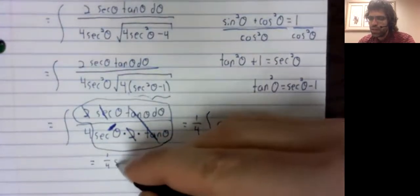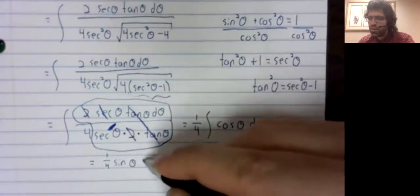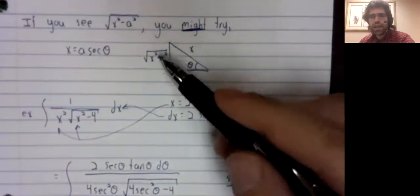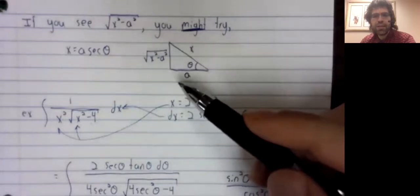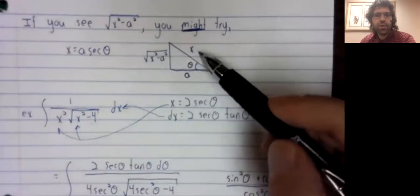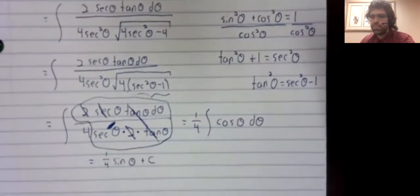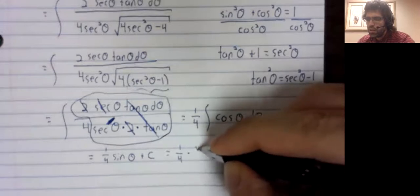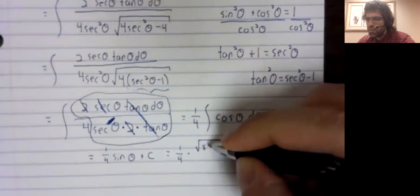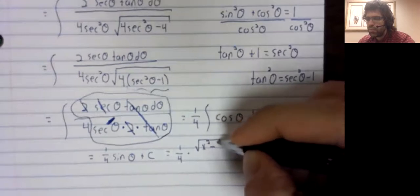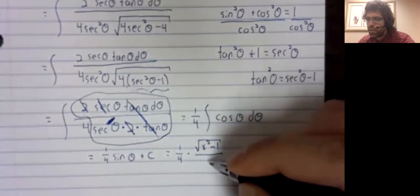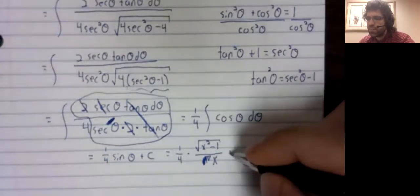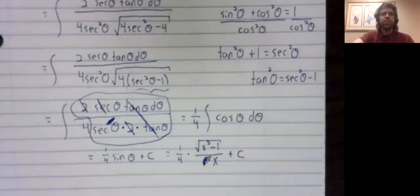The antiderivative of the cosine is the sine. And as we predicted, having this triangle in the back of our mind came in handy. The sine is the opposite over the hypotenuse. So, one fourth times the square root of x squared minus one divided by the hypotenuse, plus our constant of integration.